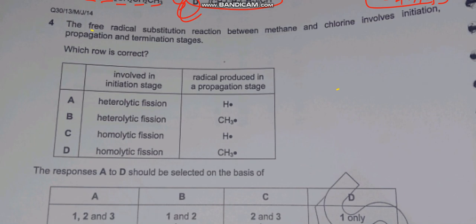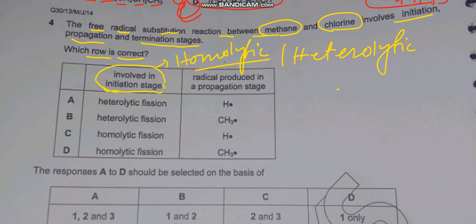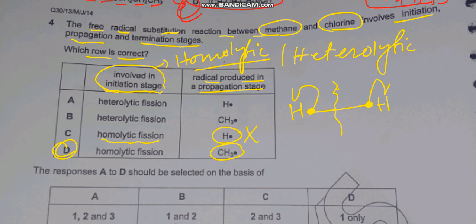Question four: the free radical substitution reaction between methane and chlorine involves initiation, propagation, and termination stages. In the initiation stage, there is always homolytic breakdown — there are two types: homolytic and heterolytic. Homolytic fission means equal breakdown of the covalent bond, with each atom retaining one electron. So options C and D can be selected. Since hydrogen is never a free radical in the propagation step, option D is correct.